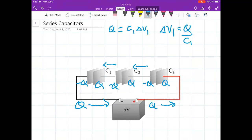So I can say that the voltage on this one, delta V1, is equal to that charge over C1. The voltage on the second one, delta V2, is the charge over C2. Voltage on the third one equal to that charge over C3.